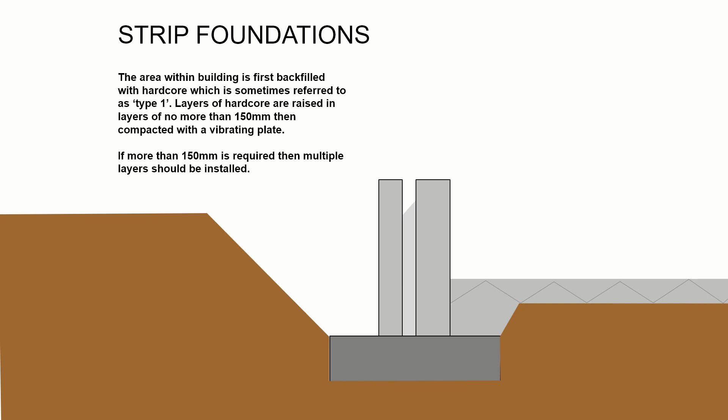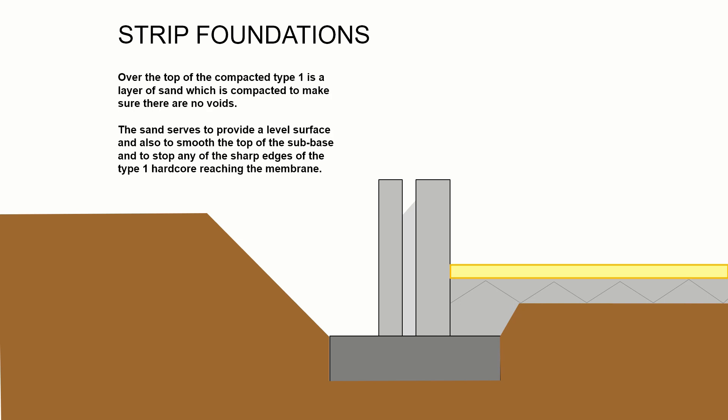The inside part of the construction is backfilled with hardcore type one, laid in layers of 150 millimeters at a time, forming a sub-base for the floor. We would then blind it — applying a sand layer to smooth off the top surface of the hardcore so that nothing can penetrate the damp proof membrane.